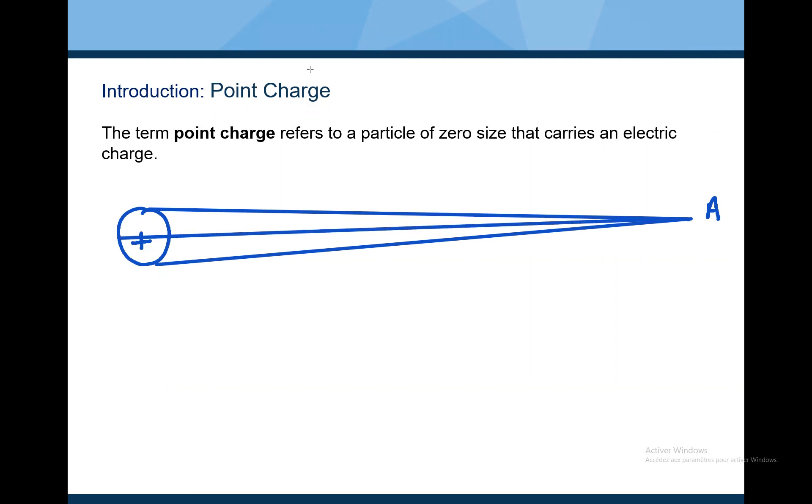So, if this is R1, R2, and R3, R1 equal R2 equal R3. We can say, in this case, that this object is considered as a point charge without dimension.